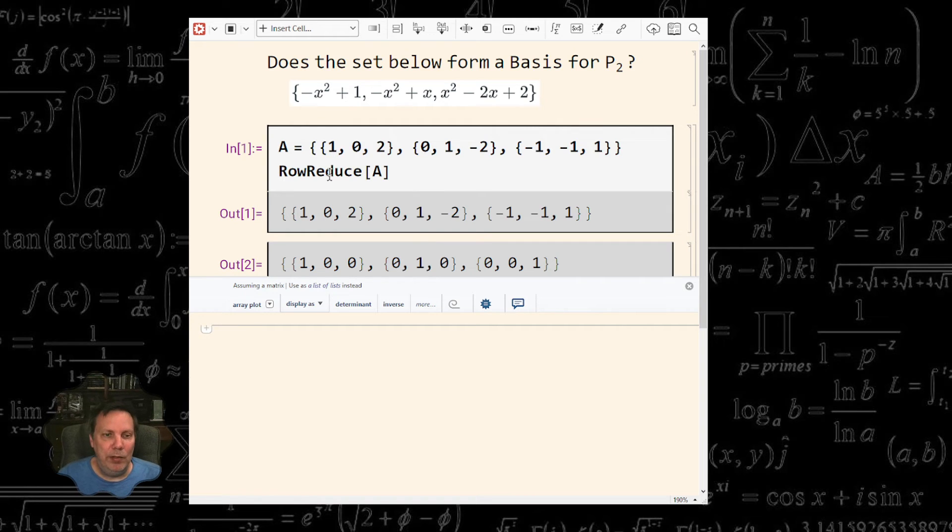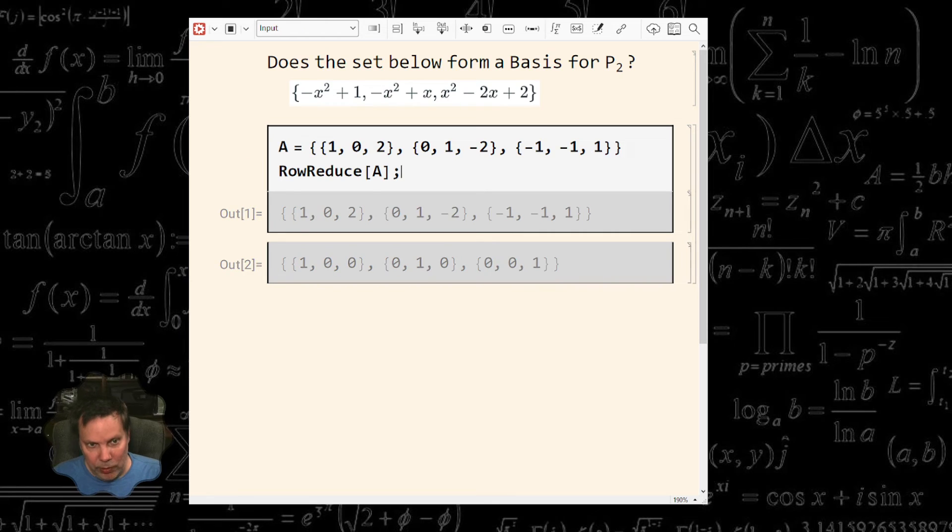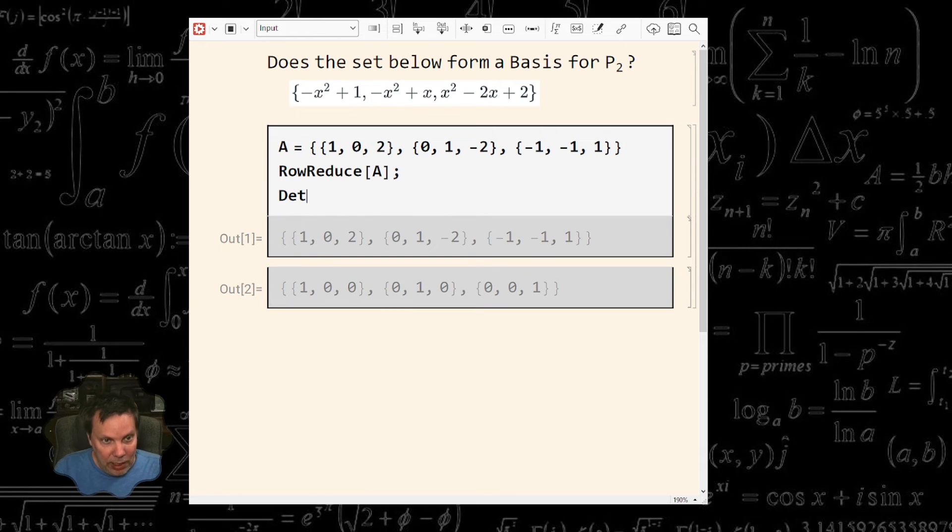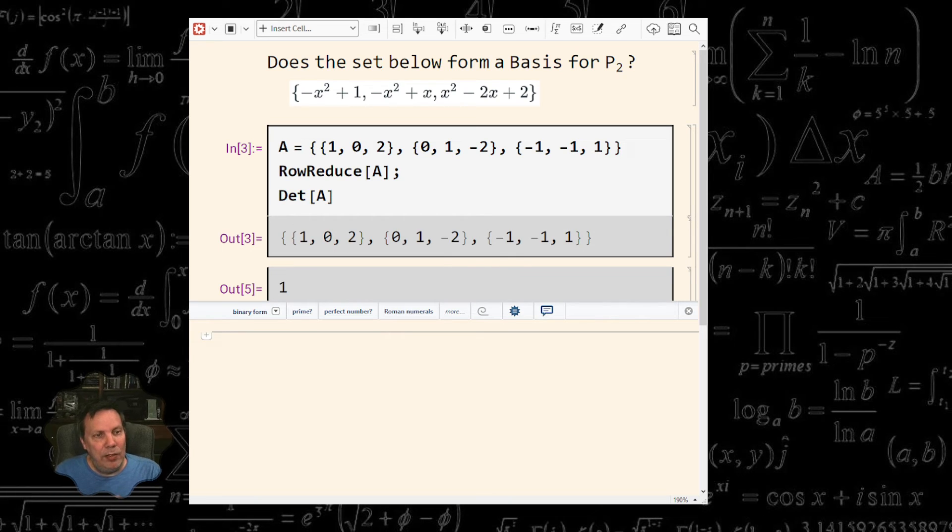Now, another way to do this, instead of row reducing this, I can look at the determinant of this matrix. And I noticed that the determinant is not equal to zero. Again, that says that I have a pivot in every single column. So I have no free variables. Therefore, I have linear independence again.